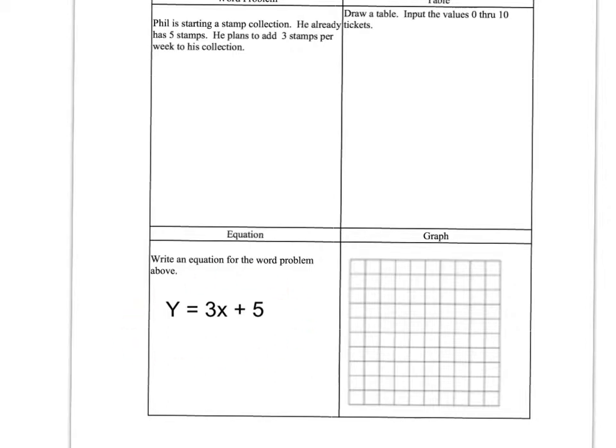Okay, here is the equation you should have come up with for the word problem. Y is the total number of stamps in this collection. 3x is three stamps per week, where the weeks are represented by the x. We don't know how many weeks. Plus five, that is representing the five stamps that Phil already has in the collection.